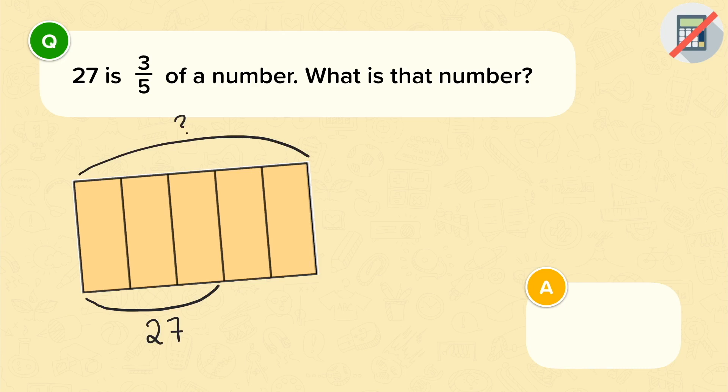If 27 is 3 fifths, then that means 1 fifth is going to be 27 divided by 3. So 9. And then there's 5 fifths in a whole. So we want 5 lots of 9, which is 45. So the original number was 45.